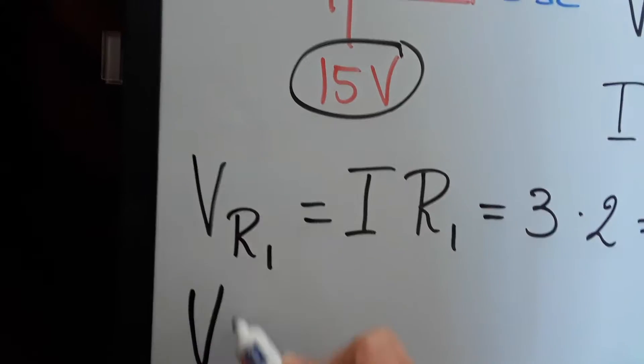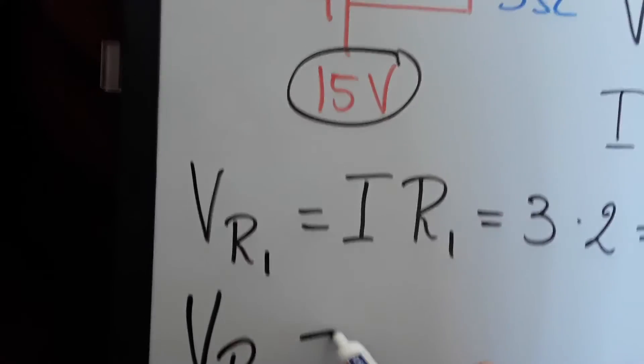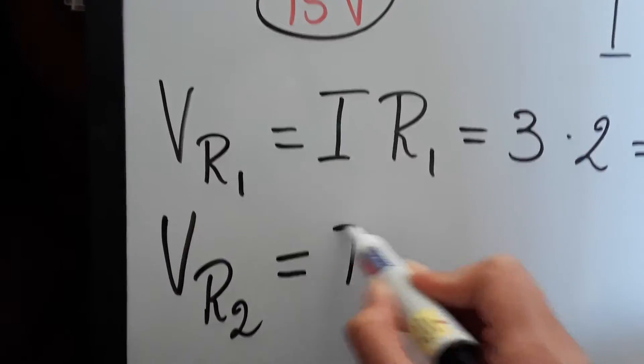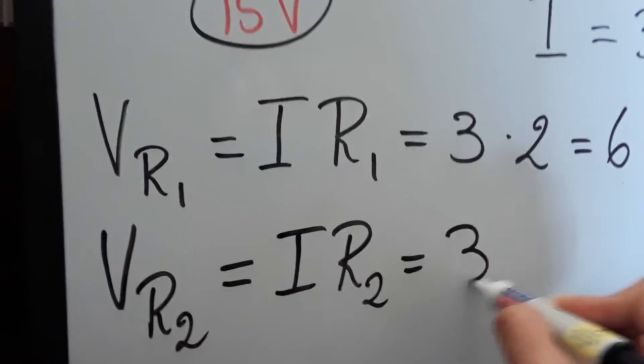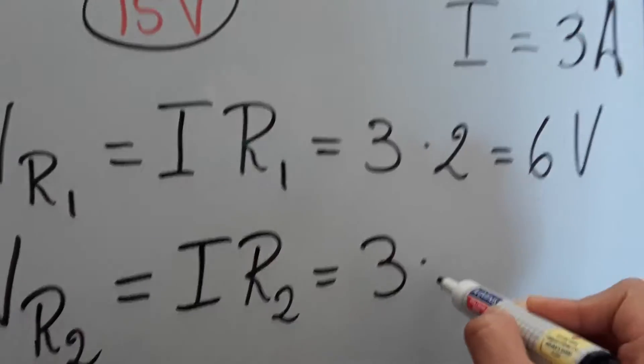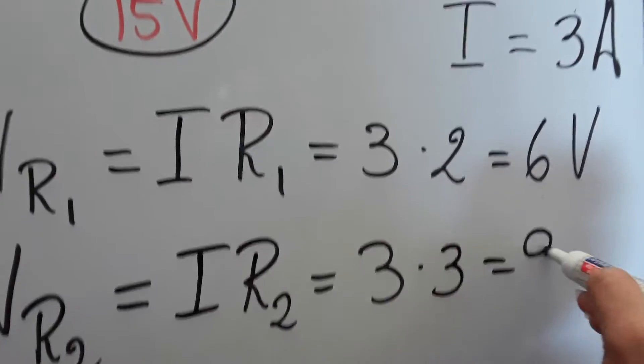And for VR2, you're going to have I times R2, and that's just going to be three amps times three Ohms. And that's going to be nine volts.